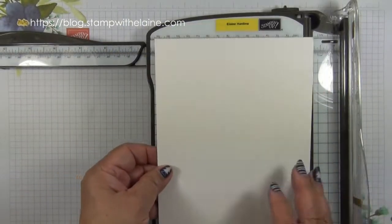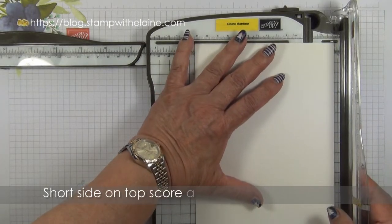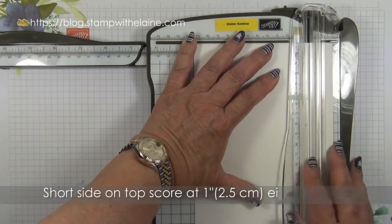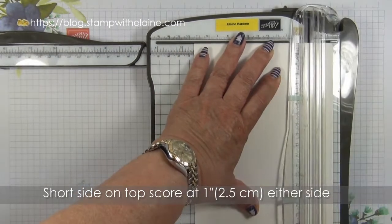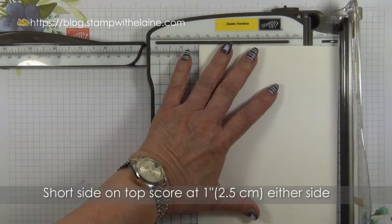Turn your card so that the short side is on the top and then you score at one inch on either side, and then one inch on the opposite side.